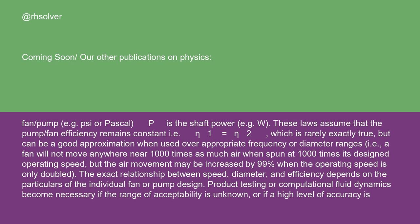These laws assume that the pump/fan efficiency remains constant, i.e. η1 equals η2, which is rarely exactly true, but can be a good approximation when used over appropriate frequency or diameter ranges. A fan will not move anywhere near 1,000 times as much air when spun at 1,000 times its designed operating speed, but the air movement may be increased by 99% when the operating speed is only doubled. The exact relationship between speed, diameter, and efficiency depends on the particulars of the individual fan or pump design. Product testing or computational fluid dynamics become necessary if the range of acceptability is unknown or if a high level of accuracy is